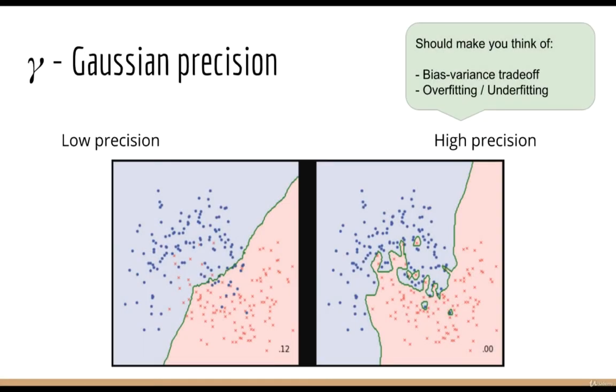The result of this is that we can change the expressiveness of the decision boundary. When we have low precision, we can imagine that the landmarks are not very precise. So the decision boundary is smooth. When we have high precision, we can imagine that the landmarks are extremely precise. They allow for sharp corners and turns, giving you a very expressive decision boundary. You can think of this in terms of the bias-variance tradeoff, or overfitting and underfitting. When we have low precision, we'll have a higher bias, lower variance, and will tend to underfit. When we have high precision, we'll have a lower bias, higher variance, and will tend to overfit.